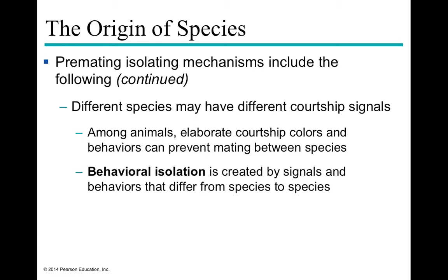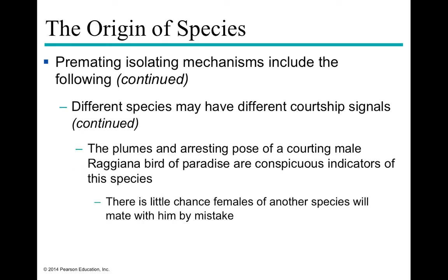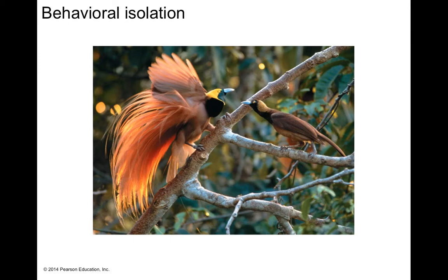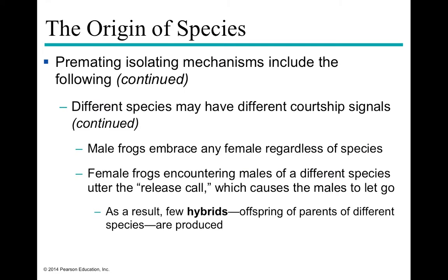Behavioral isolation occurs based on some behavioral mechanism that differs between species, such as courtship colors or courtship rituals. An example is the Raggiana bird of paradise, a very conspicuous species with large plumes and a distinctive arresting pose. There's very little chance that females of any other species will mate with it by mistake. This is an example of behavioral isolation, where a courtship ritual ensures individuals of one species would not mate with another.